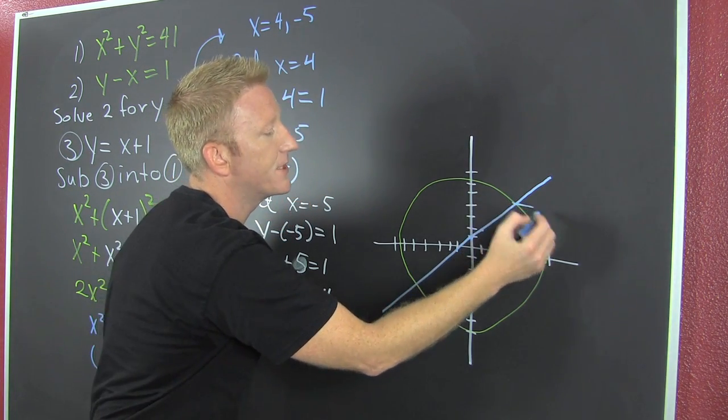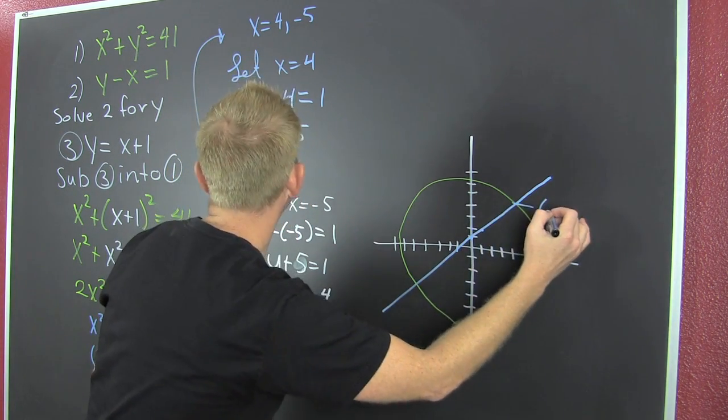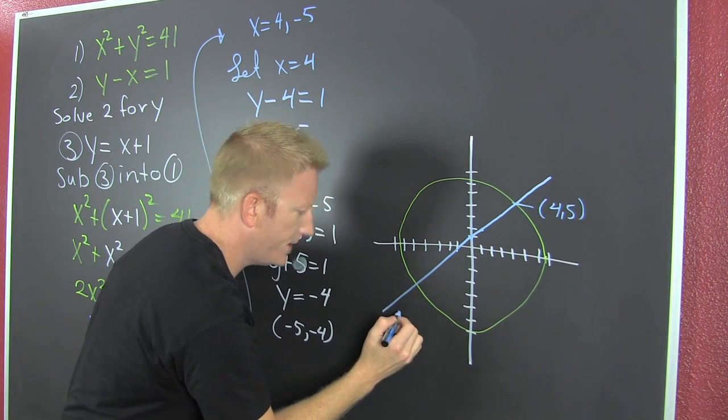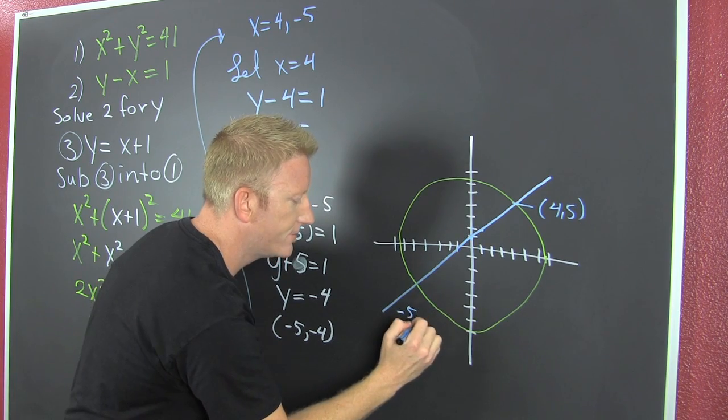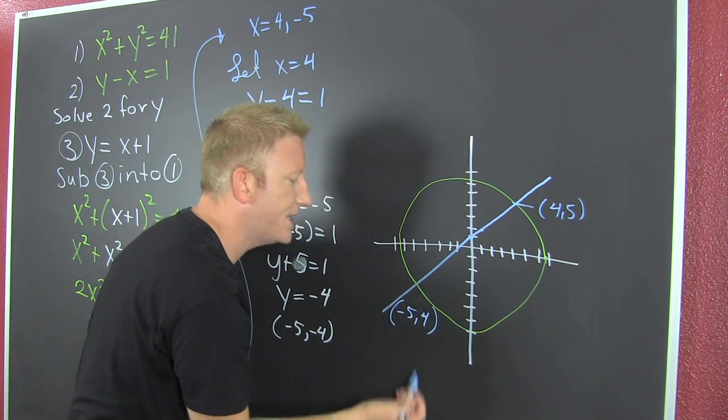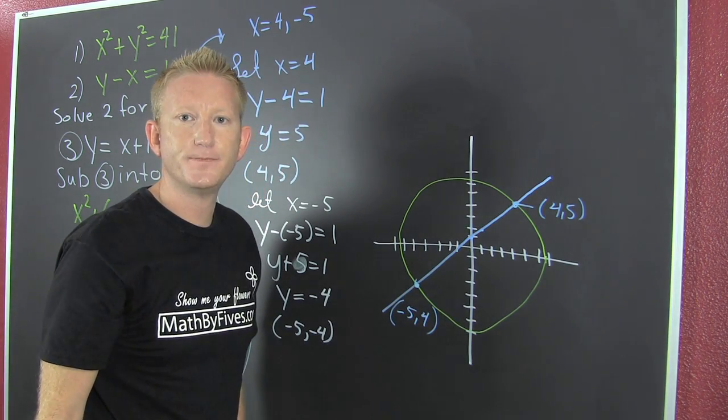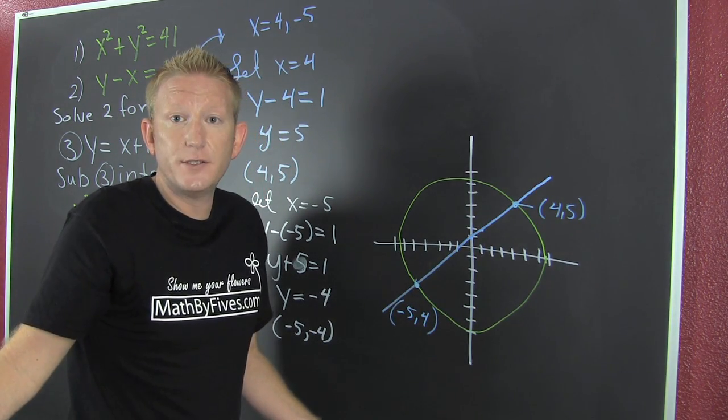And if this wasn't a crude example, this would be 4, 5. And this one would be minus 5, minus 4. When I say this one, I mean the intersection between that line and that circle. Not a perfect circle.